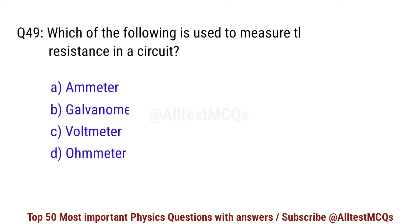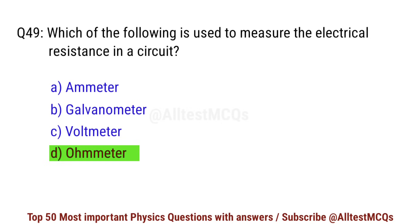Question number 49. Which of the following is used to measure the electrical resistance in a circuit? Correct option is D. Ohmmeter.